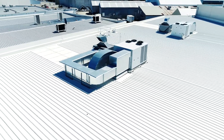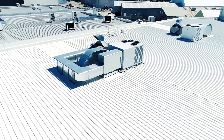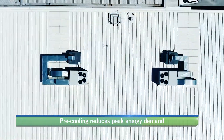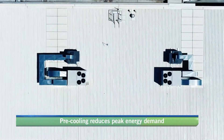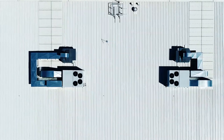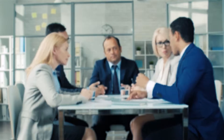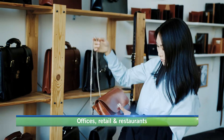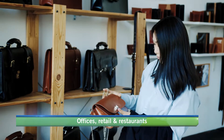Climate Wizard is often used to pre-cool outside air in refrigerated systems, thereby reducing peak energy demand and making it ideal for offices, retail stores and restaurants.